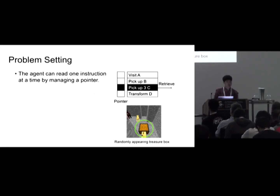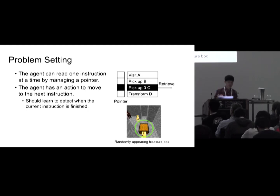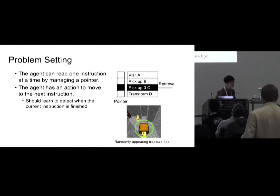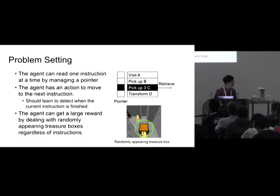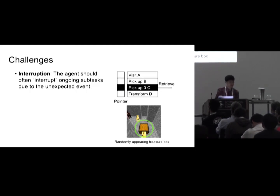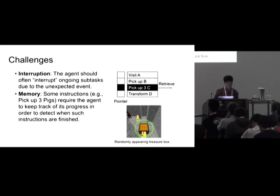The agent can read one instruction at a time by managing a pointer over the instruction list, and it has an external action that moves this pointer to the next instruction. The agent has to learn when to move on by detecting when the current instruction is finished. There is a randomly appearing treasure box that gives a large bonus reward, so the agent sometimes has to interrupt ongoing sub-tasks before termination. Some special instructions like 'pick up three peaks' require the agent to keep track of progress to precisely detect when such instructions are finished.